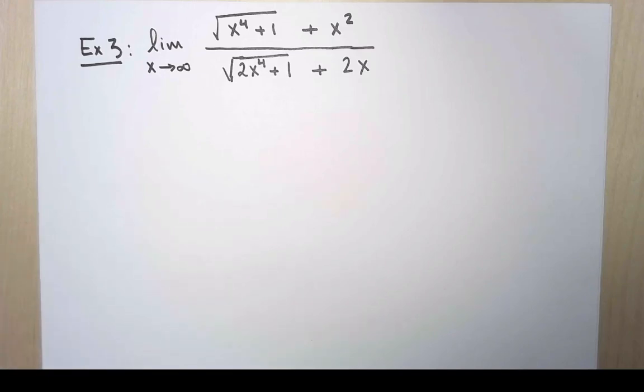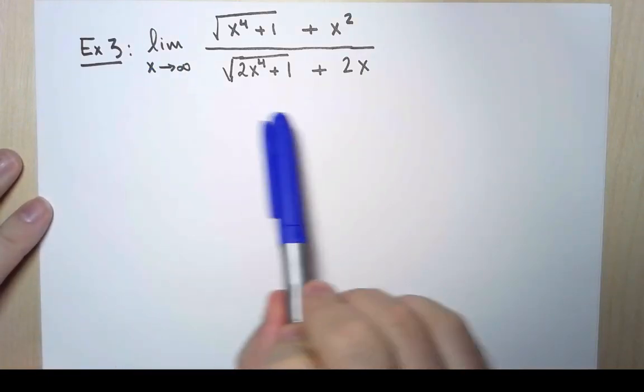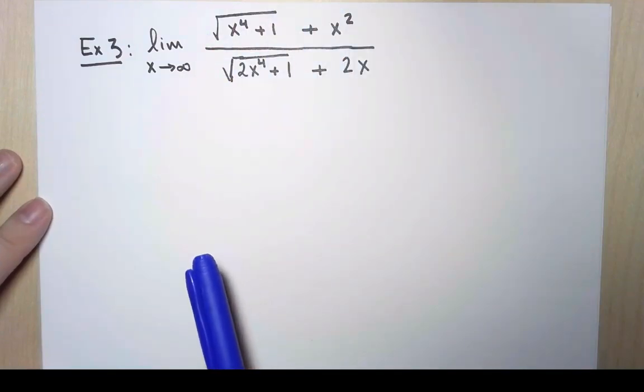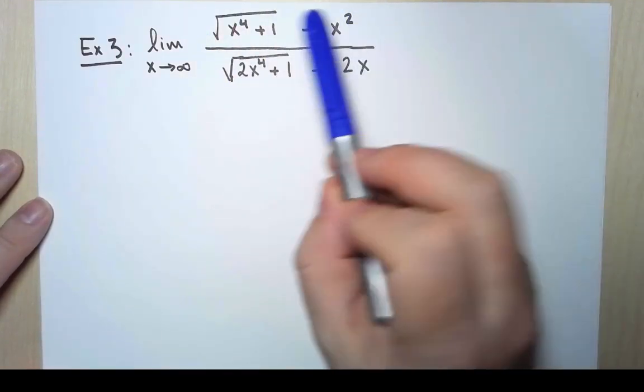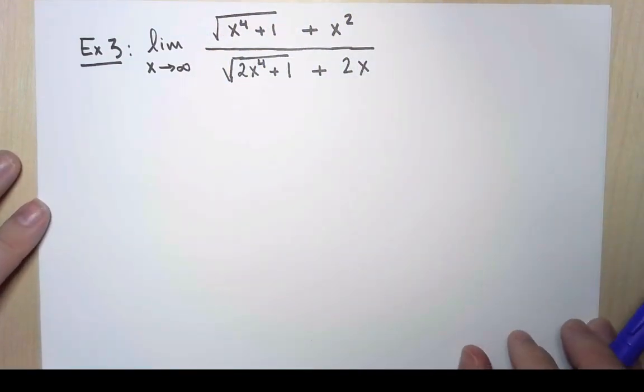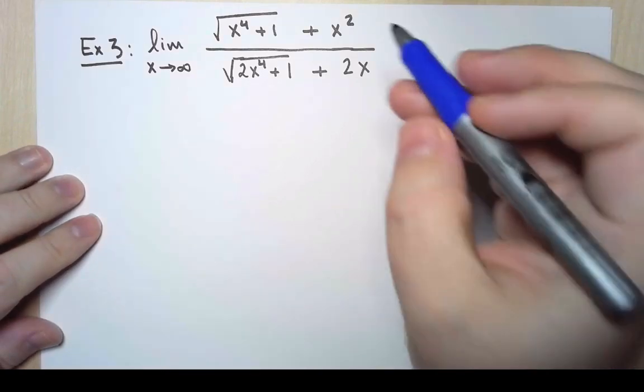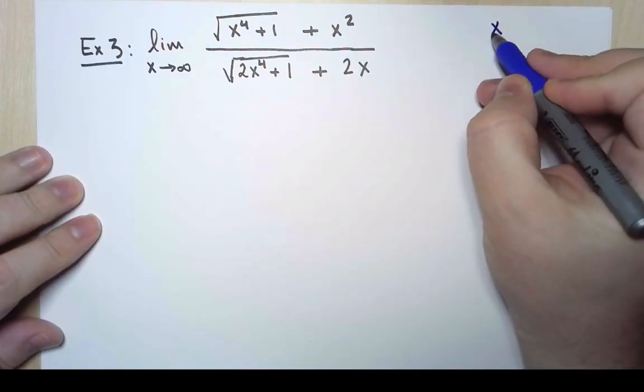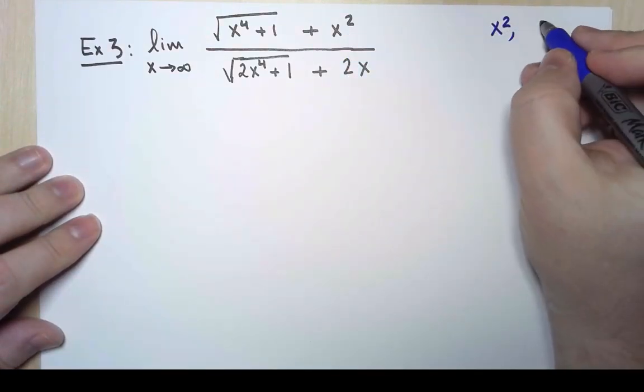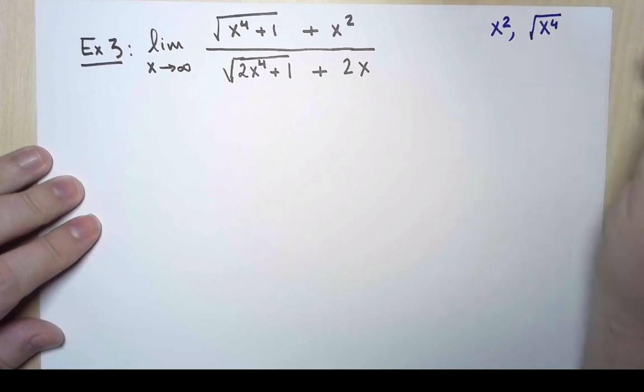I can extend the same ideas even to other functions. For example, the limit as x goes to infinity of this function. This is a quotient of sums of polynomials and roots of polynomials, but I'm going to treat it the same way. I'm looking for the term with the biggest exponent at both the top and the bottom, but careful with the square root. At the top, I notice here that I have x squared, but I also have a term that is x to the fourth inside the square root, and I think of that as x squared as well.